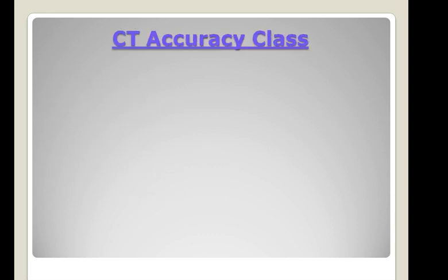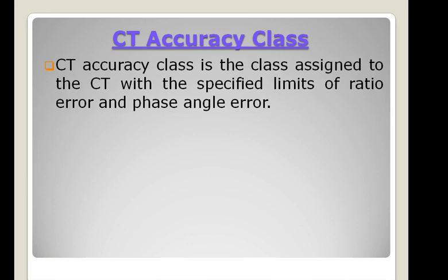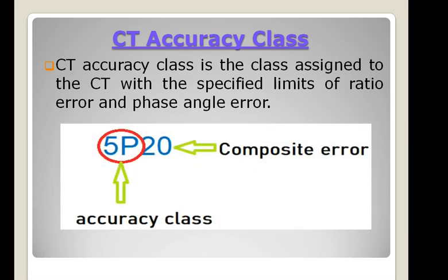Now coming to the accuracy class of CT. Accuracy class of a CT is the class assigned to the CT with specified limits of ratio error and phase angle error. For relaying purposes, ratio error is of most importance. CT secondary load has a very high lagging power factor, and hence CT secondary current is almost in phase opposition with the magnetizing current. Therefore phase angle error is negligible in this case. Ratio error is very significant because currents are high during short circuit conditions. In this figure, 'P' is the accuracy class of the protection CT, and 20 is the composite error — meaning the CT will not saturate and maloperate up to 20 times the rated current.